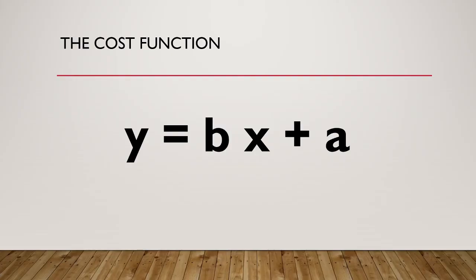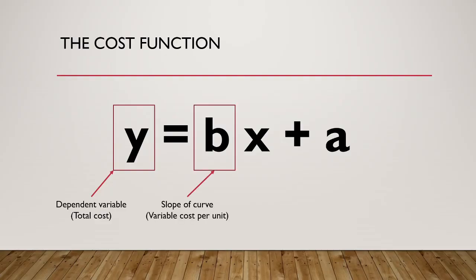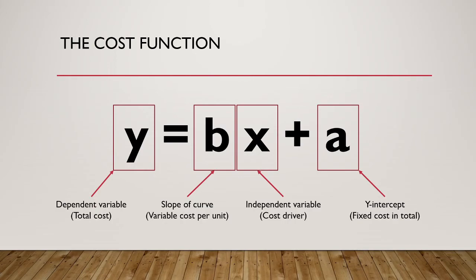Now let us move on to the cost function. This cost function of y equals bx plus a represents a mixed cost. In this cost function, y represents the total cost incurred, b represents the variable cost per unit, and x represents the level of activity. Importantly, the term bx together represents the total variable cost. Finally, a represents the fixed cost in total. We can use parts of this cost function to represent pure variable costs and pure fixed costs: if we take the portion y equals bx, we have a pure variable cost function; if we only take y equals a, we have a pure fixed cost function.